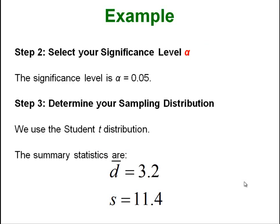Step 2, our significance level was given 0.05. Step 3, we want to determine our sampling distribution, and since we are doing matched data, paired data, we know that we have to use a student t distribution. Then we can look at our summary stats.